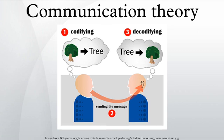Ralph Hartley's 1928 paper, 'Transmission of Information,' uses the word information as a measurable quantity, reflecting the receiver's ability to distinguish one sequence of symbols from any other. The natural unit of information was therefore the decimal digit, much later renamed the Hartley in his honor as a unit or scale or measure of information.